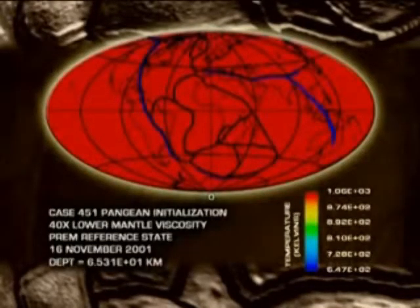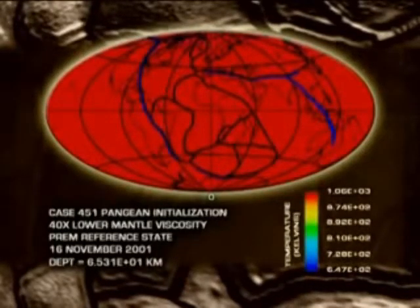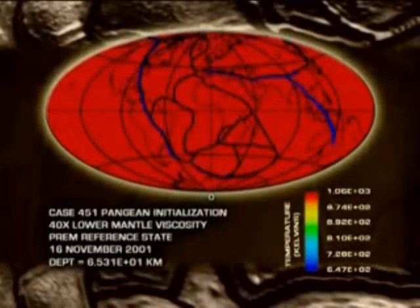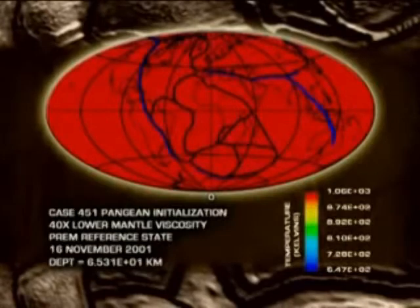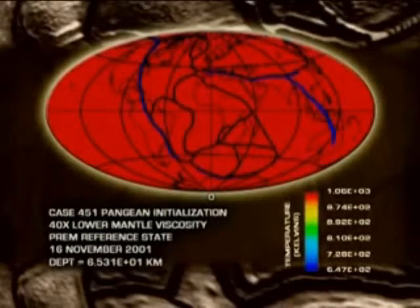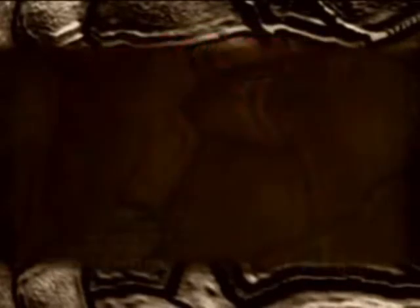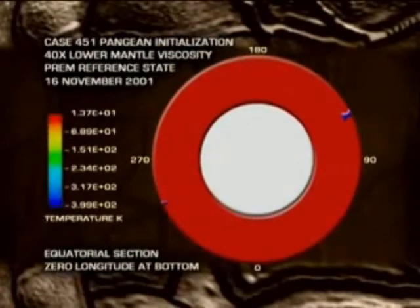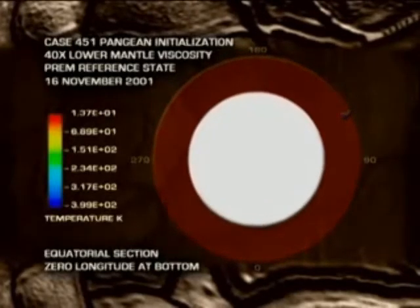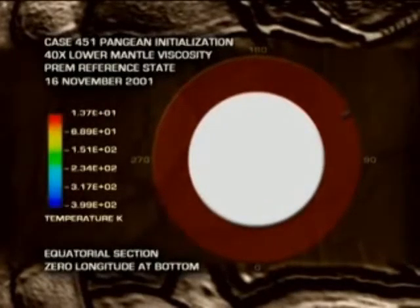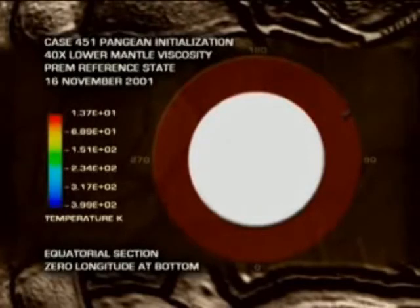I take that roughly the present-day continents, move them back to their Pangean positions, put cold material around most of the boundary of this supercontinent, the blue that you see there. That blue material is 400 degrees cooler than everything else, extends down about 400 kilometers into the mantle. This is a slice through the equator. The white area in the middle corresponds to the core. I'm not including the core in the calculation.